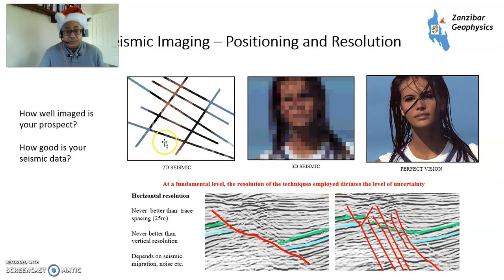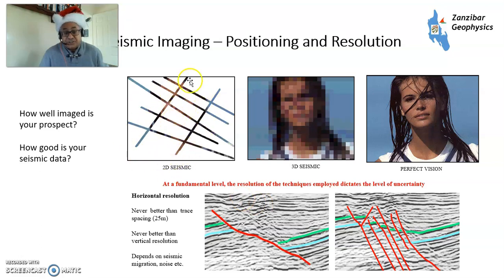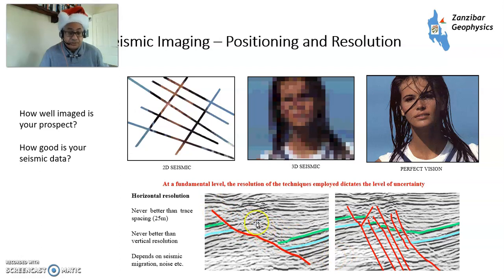Another issue is seismic imaging, positioning, and resolution. How well imaged is your trap? It could be that you mislocated your well because you simply couldn't image the structure properly in the first place. Quite a lot of old data was drilled on 2D seismic, and looking at those sections it's quite difficult to make out where things are. 3D seismic is better because you've got bins with improved horizontal resolution and interpretation. So it's worth asking: how good is your seismic data?